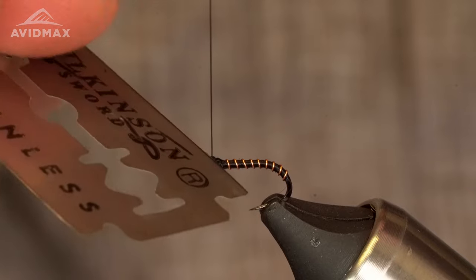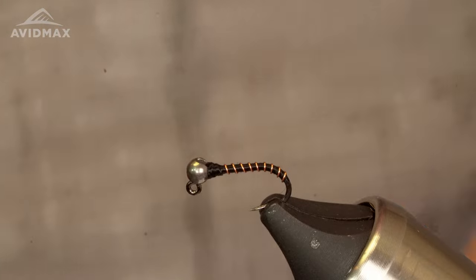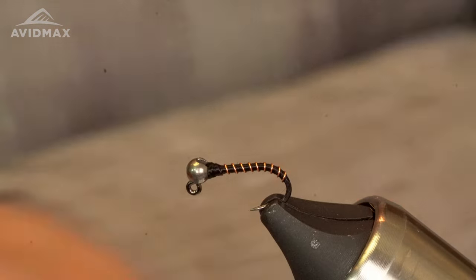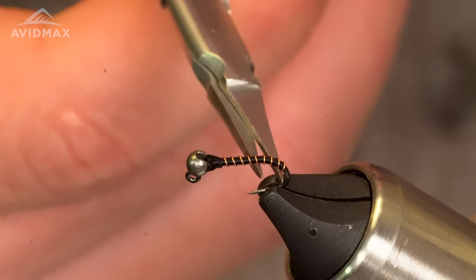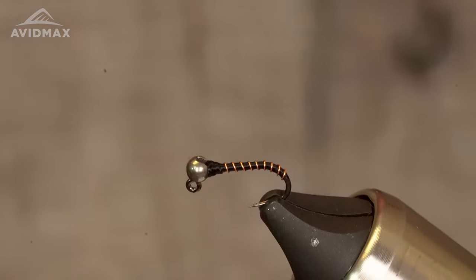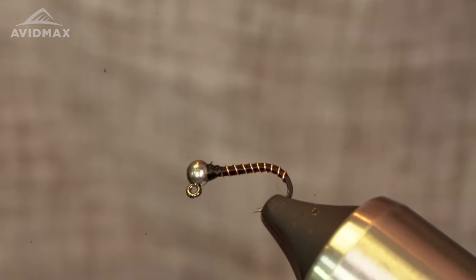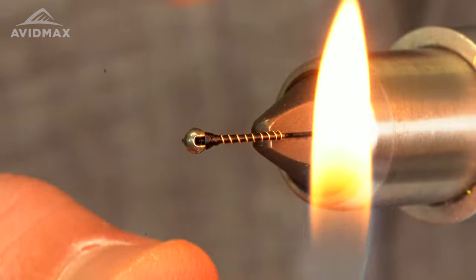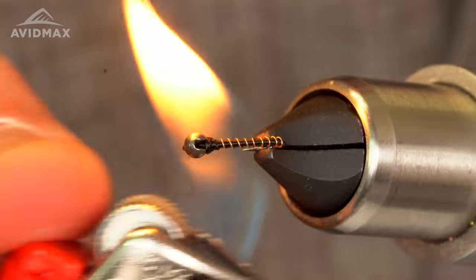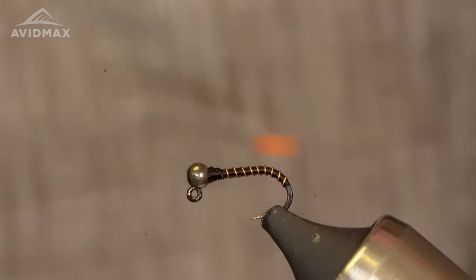Take my handy dandy sword here, get yourself a sword. And if you have little stragglers like you can see right back there, handy dandy flame, just a quick touch, gets everything back in order, nice and cleaned up.